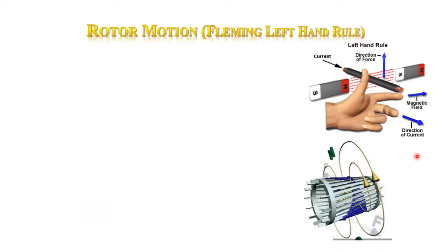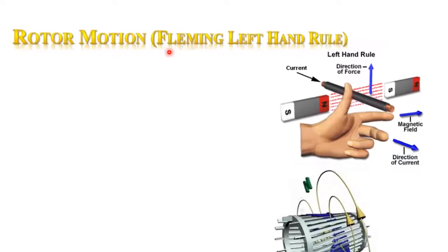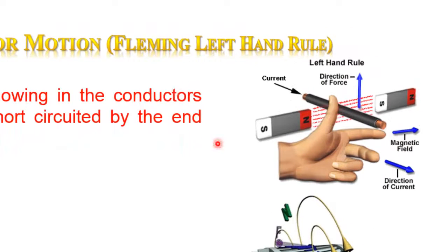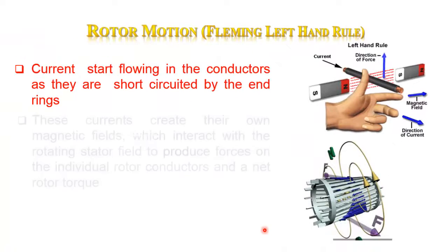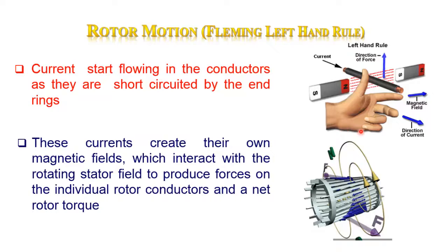Once the current established in rotor conductors, now applies another property of magnetic field, which states that a current carrying conductor when placed in magnetic field experiences a force which moves the conductor. The direction of force is given by Fleming left-hand rule.